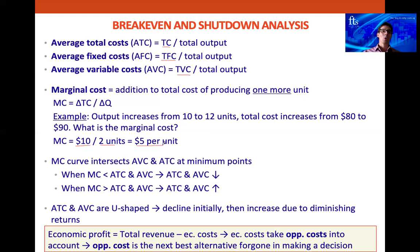The marginal cost curve intersects the average variable cost and average total cost curves at their minimum points. When the marginal cost is below the average total cost and the average variable cost, it actually brings them down — which makes a lot of sense.